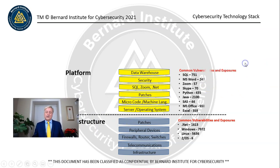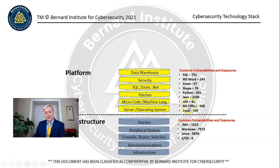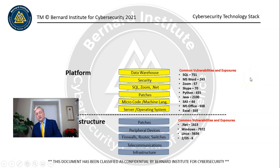The platform has a number of vulnerabilities. For example: SQL has 751 known vulnerabilities, MS Word has 243, Zoom has 57, Skype has 70, Python has 435. Python is a fourth-generation language — pretty high-level coding, not like C# or Java. However, Java has 2,100 vulnerabilities. SAS has 44, Microsoft Office has 558, and Excel has 359 vulnerabilities. So there are a lot of vulnerabilities within the stack, both at the infrastructure and platform levels.